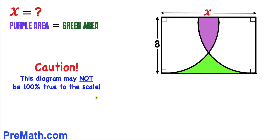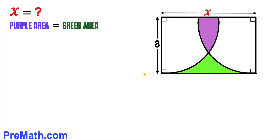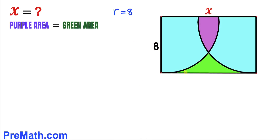Note that this figure may not be 100% true to scale. Let's get started. We can see that this length is the radius of this quarter circle and this is eight units, so therefore our radius for this quarter circle is going to be eight units.